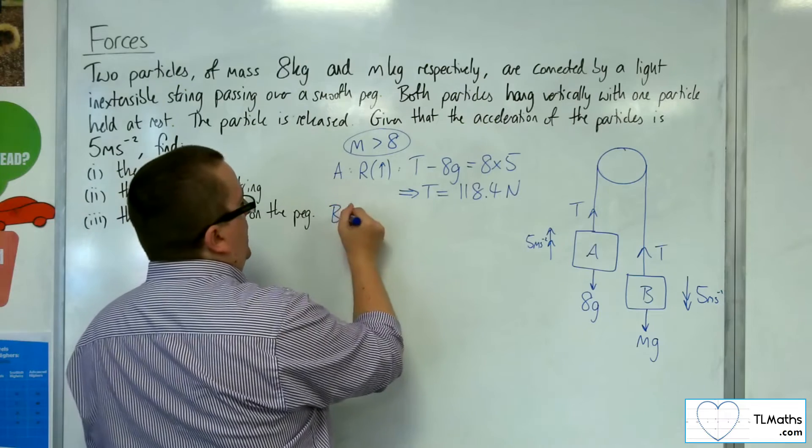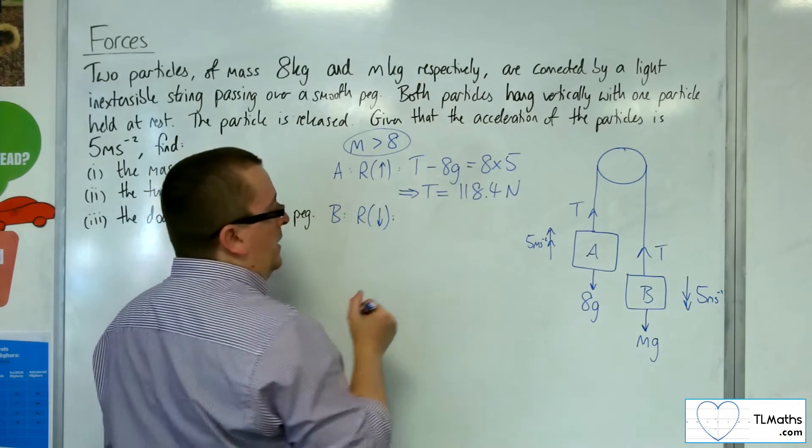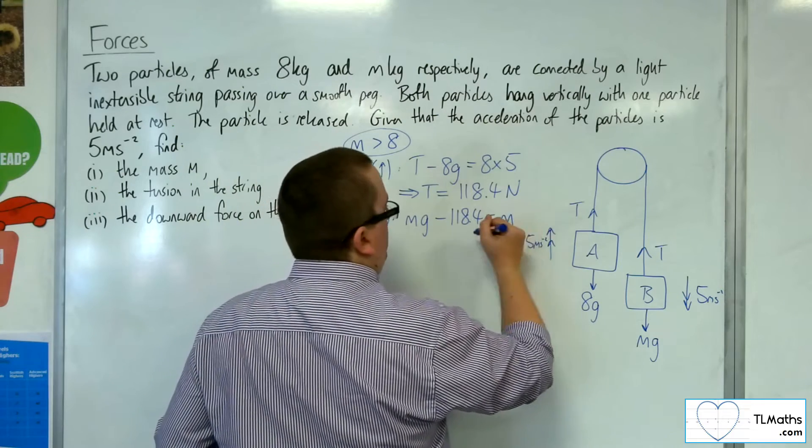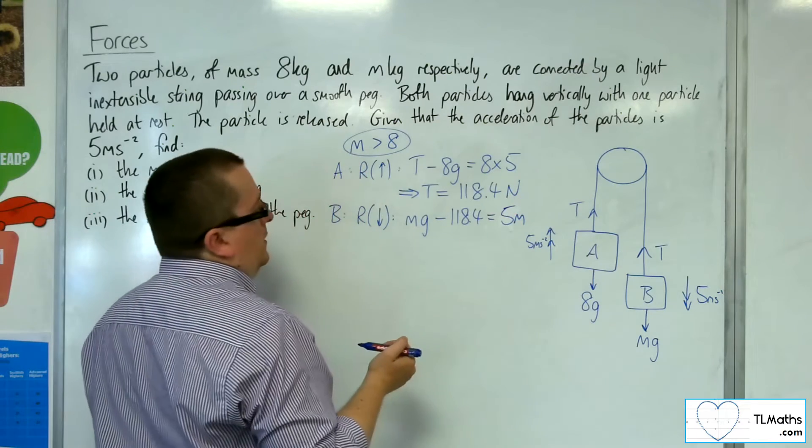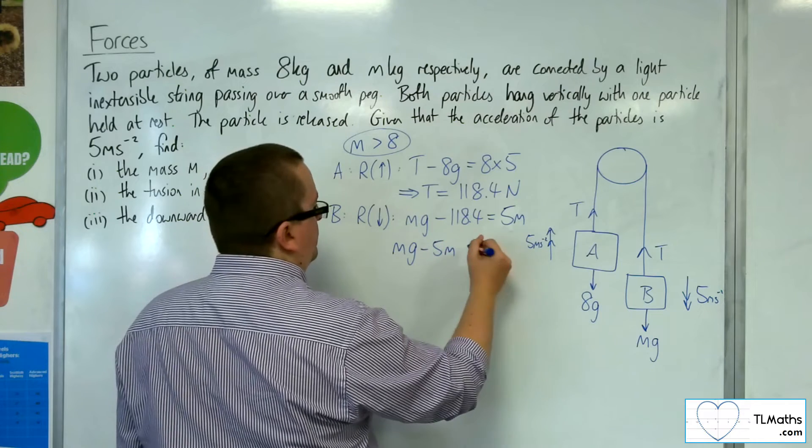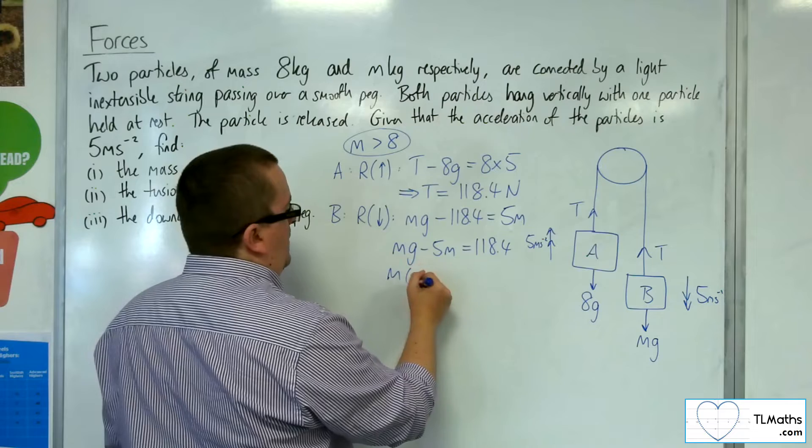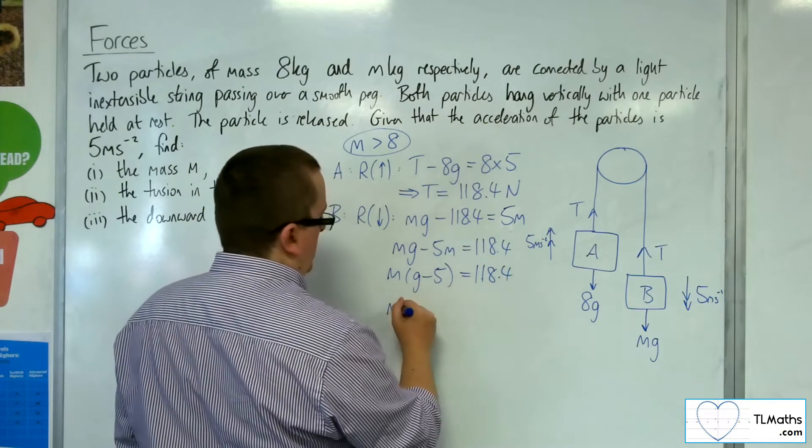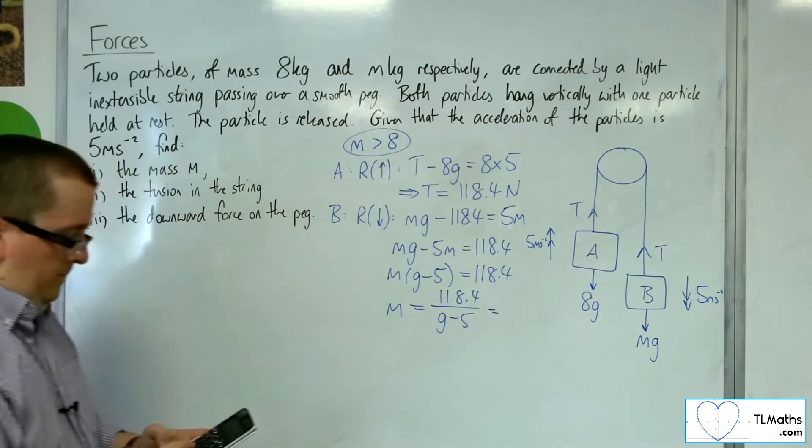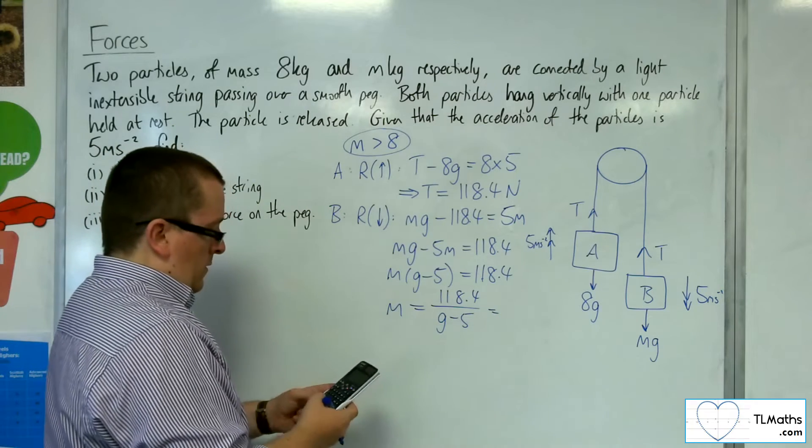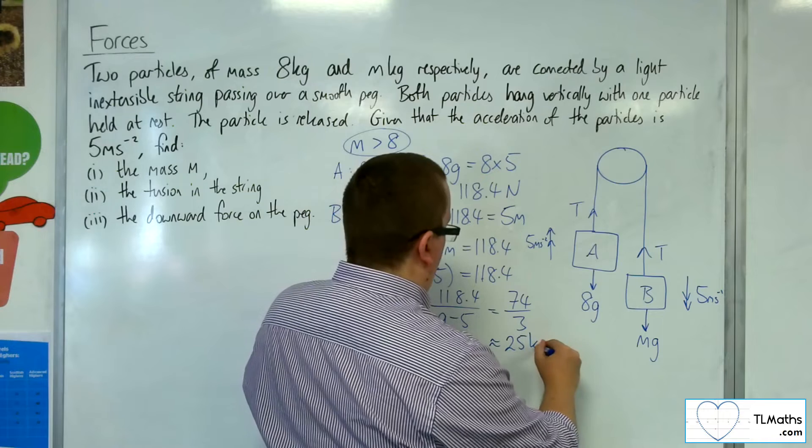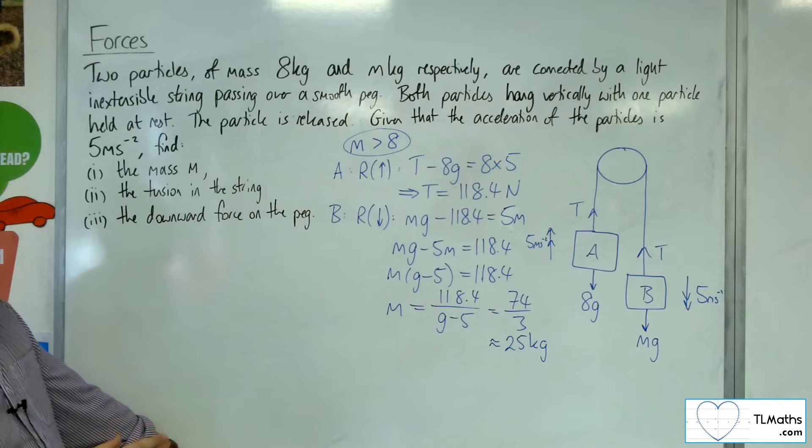Now for particle B, if we look at particle B, then we can resolve taking downwards as positive. We've got mg take away T, which is the 118.4, is equal to the mass times the acceleration. So m times 5, so 5m. Right, so I need to get m equals. If I add the 118.4 to both sides and take the 5m from both sides, I can factorise that, take the m out. I've got g minus 5 is 118.4. So m is 118.4 divided by g minus 5. So I'm taking g as 9.8 here. And we get 74 thirds, so that's approximately 25 kilos. That would be the mass of m in that case.